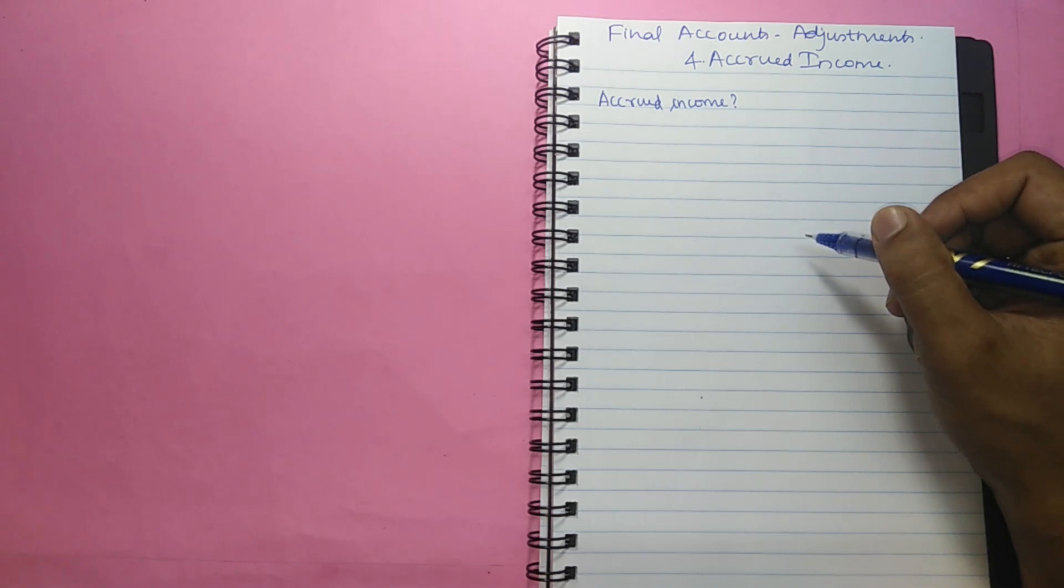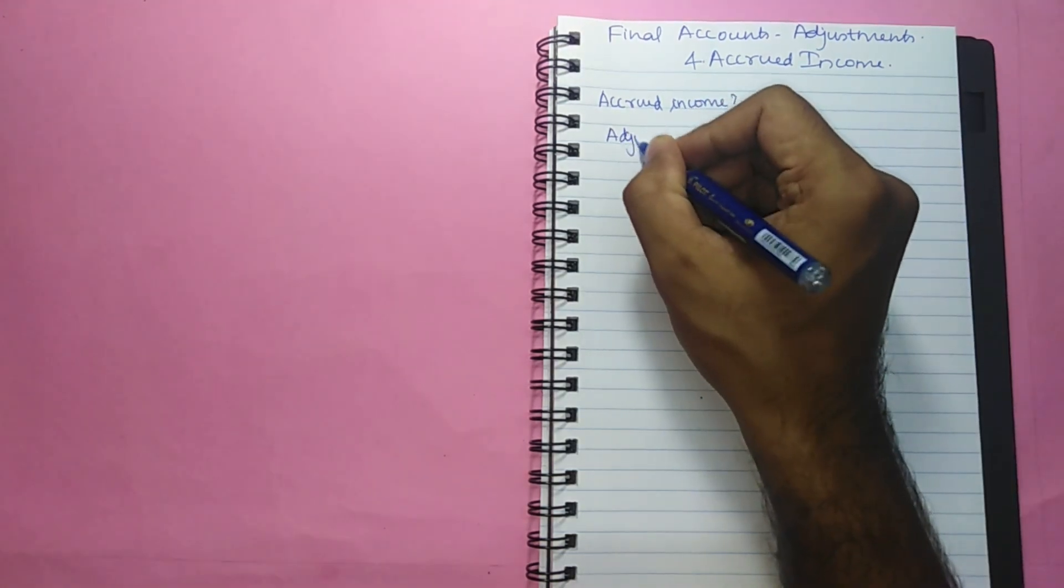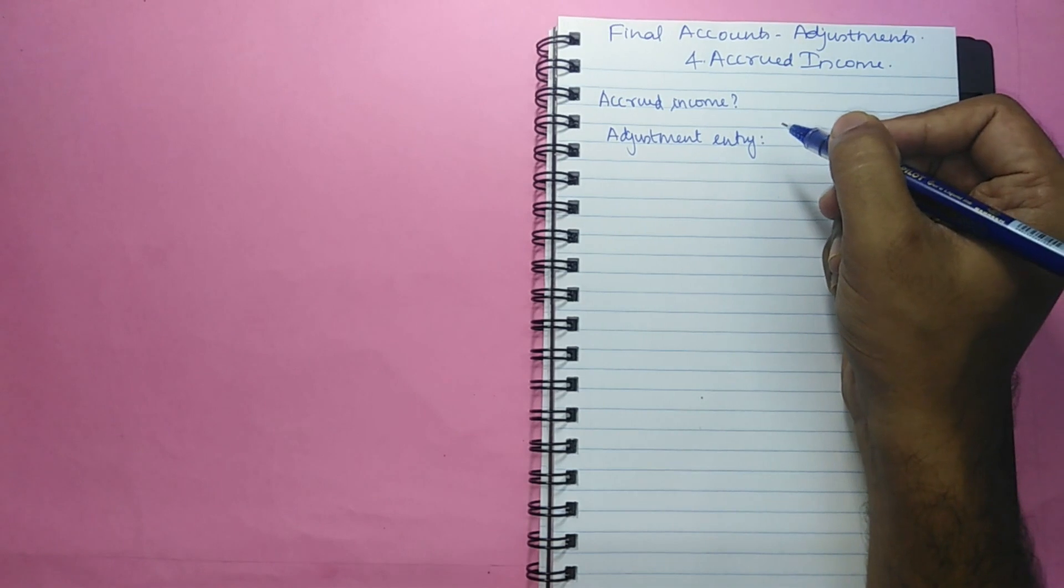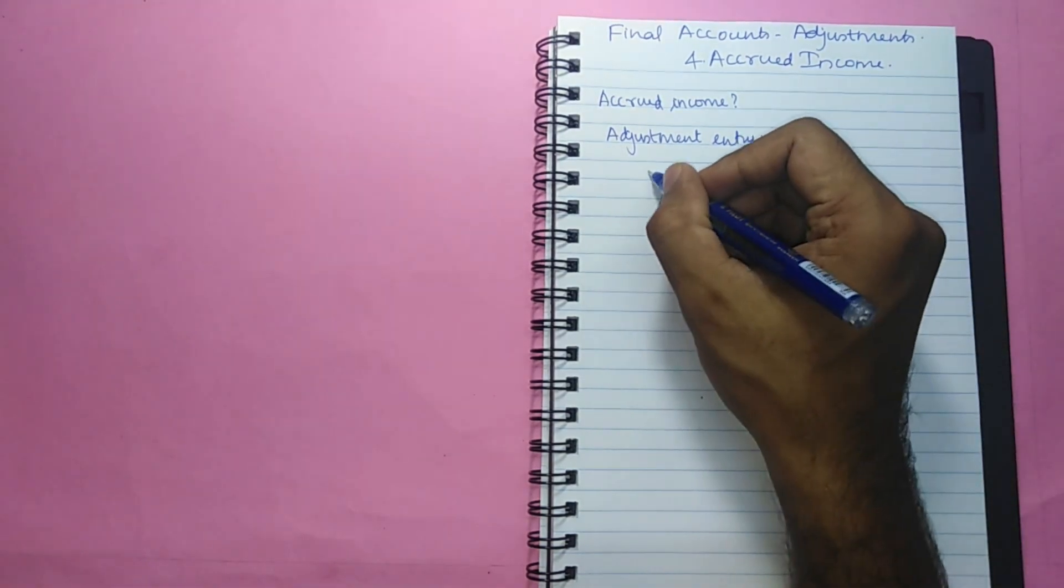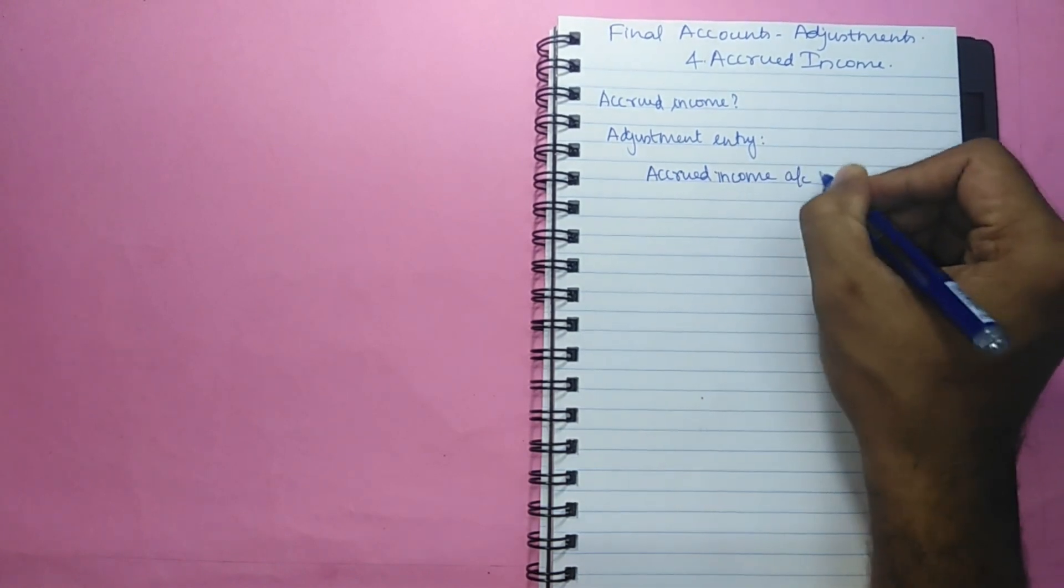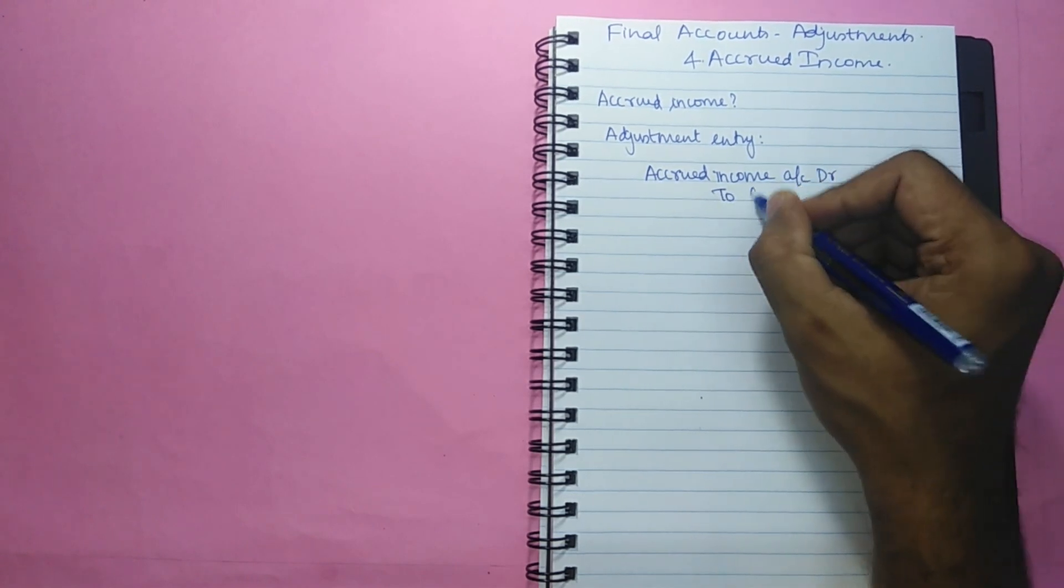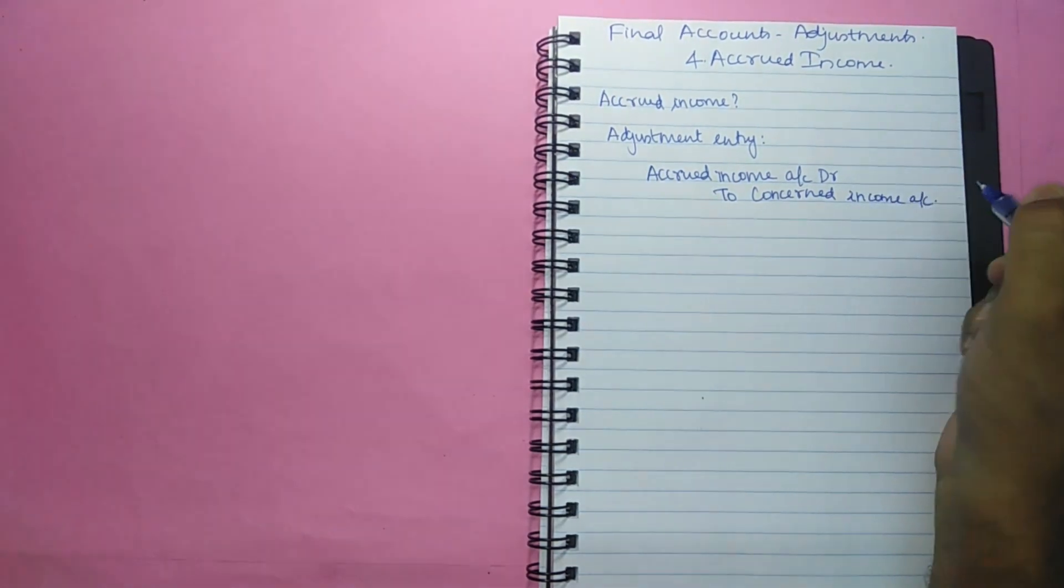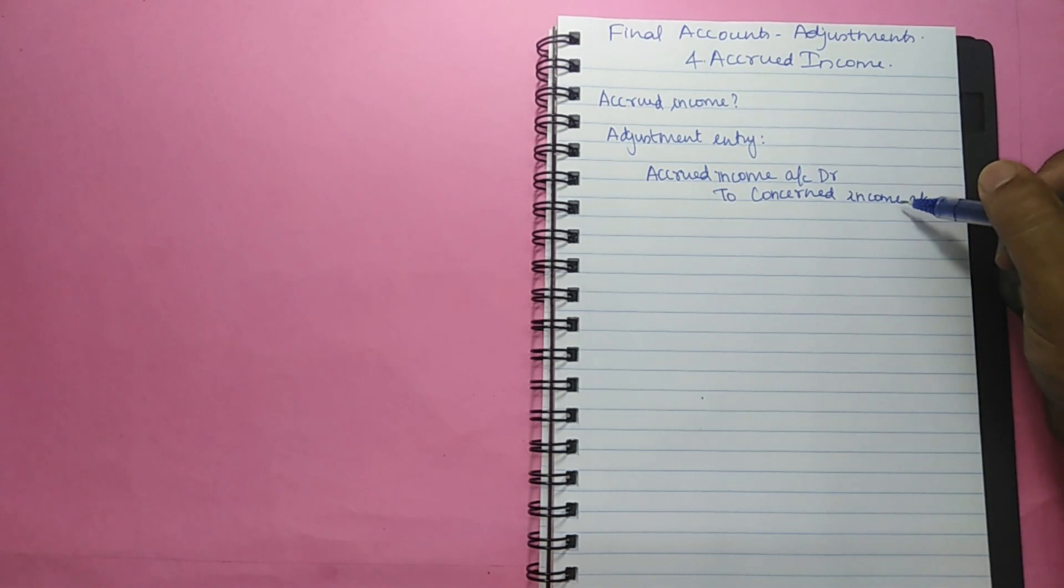In other words, the income which is earned during the current accounting period but which is not yet received by the end of the same accounting period is called accrued income. So the adjustment entry is accrued income account debit to the concerned income account. So we will be increasing the concerned income account and we will be creating a new asset accrued income.